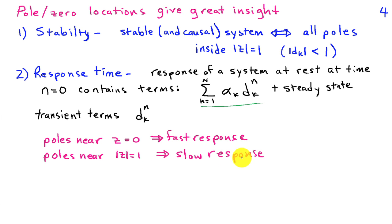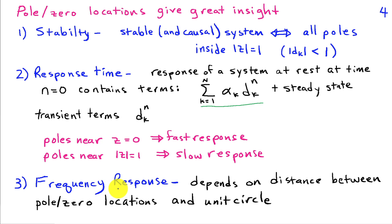The third thing poles and zeros tell us about is the frequency response. The magnitude of the frequency response can be interpreted based on the distance between the pole-zero locations and the unit circle: poles near the unit circle push the magnitude response up, while zeros near the unit circle pull the magnitude response down. From the pole and zero locations, you can get a very good idea of what the magnitude response looks like. Poles and zeros are therefore a very useful and informative characterization for linear time-invariant systems.